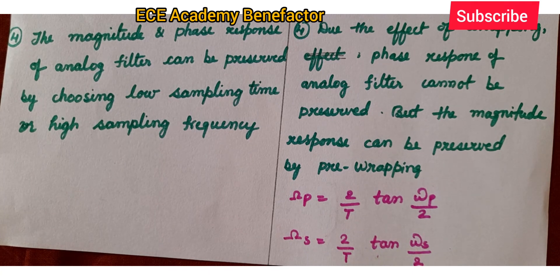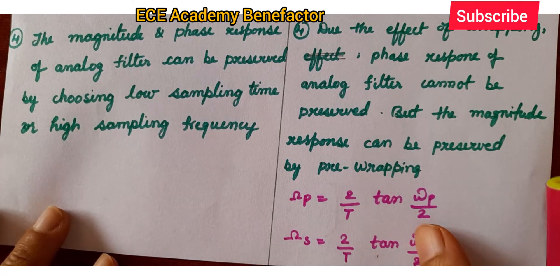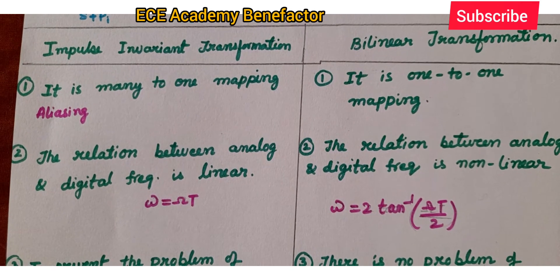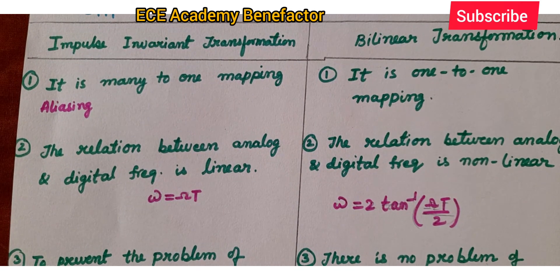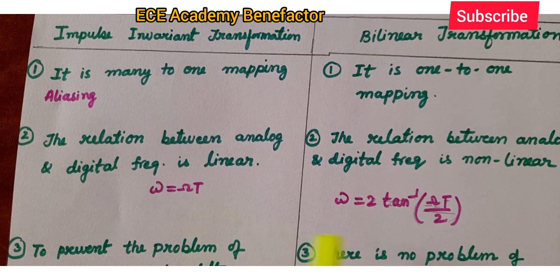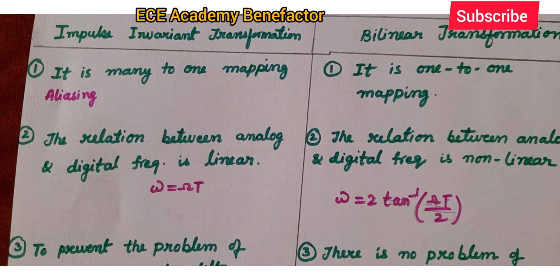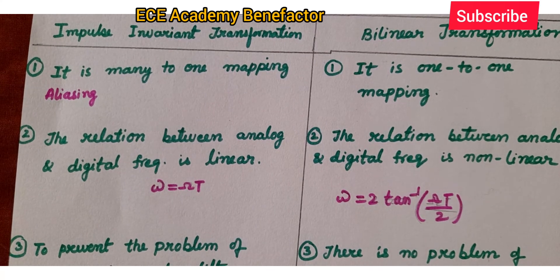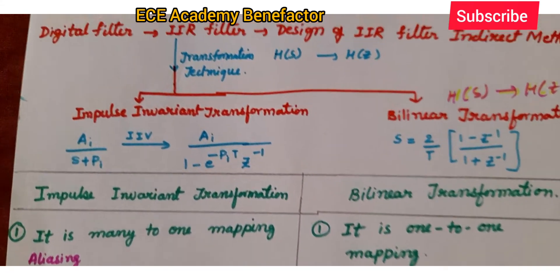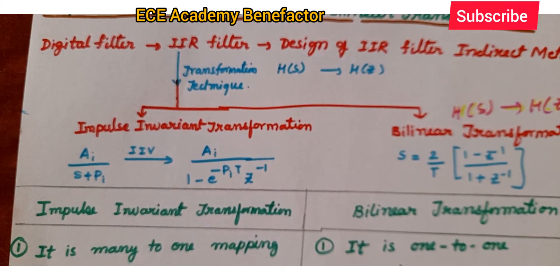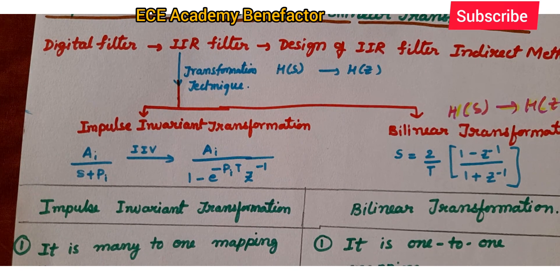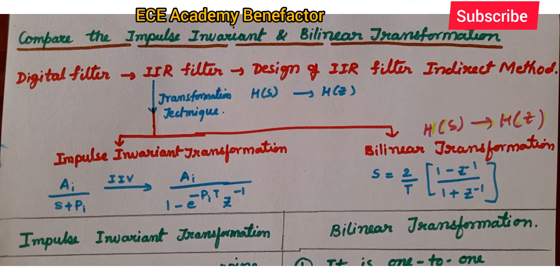So, to summarize the four comparison points: impulse invariant is many-to-one mapping, while bilinear transformation is one-to-one mapping. The relation between analog and digital frequency is linear in impulse invariant, whereas in bilinear it is non-linear. There is no problem of aliasing in bilinear transformation. I hope you have understood the comparison. If you have any queries, you can post in the comment section.